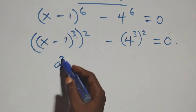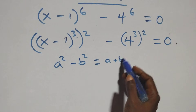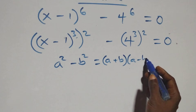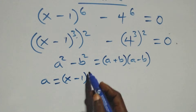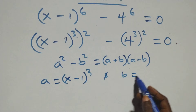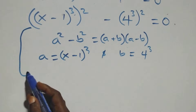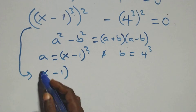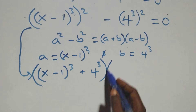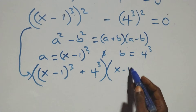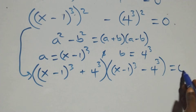In this step we have a squared minus b squared, which is factored as (a plus b) times (a minus b). Here a stands for (x minus 1) raised to power 3, and b stands for 4 raised to power 3. This implies the expression becomes [(x minus 1)³ plus 4³] times [(x minus 1)³ minus 4³] equals 0.